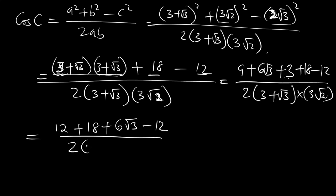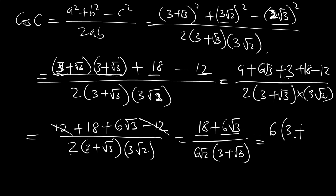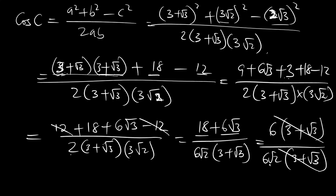The 12 and minus 12 cancel, leaving 18 plus 6 root 3 in the numerator. The denominator is 2 times (3 plus root 3) times 3 root 2, which gives 6 root 2 times (3 plus root 3). Factoring 6 from the numerator: 6 times (3 plus root 3). The 6 and (3 plus root 3) cancel from numerator and denominator.